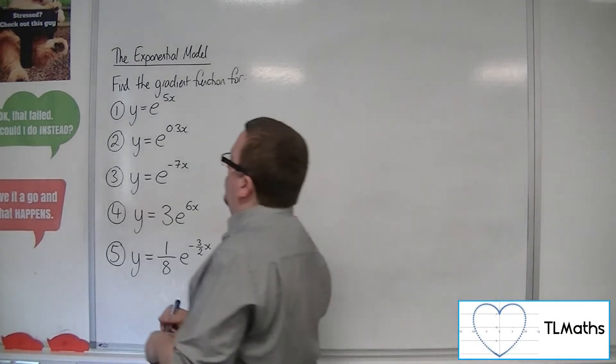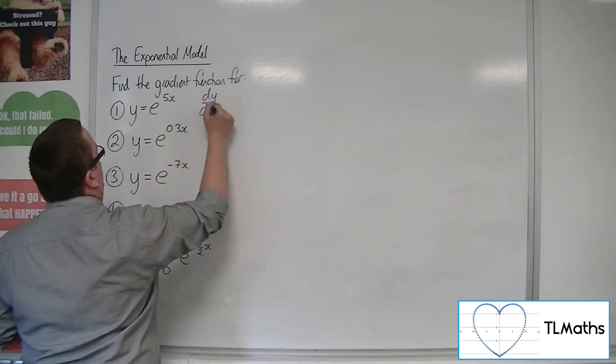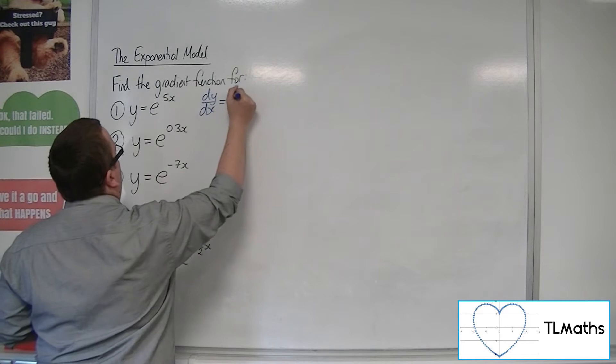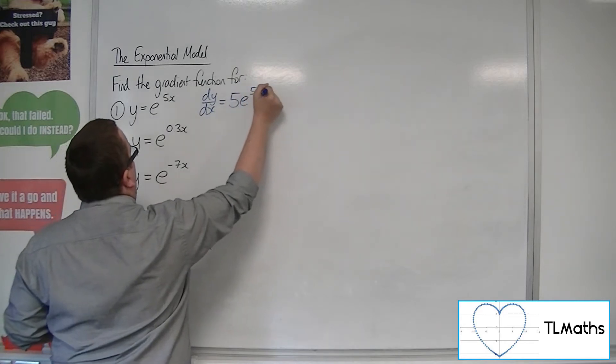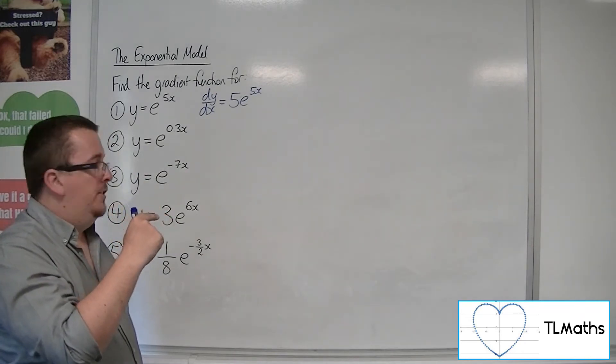So if I look at number 1, y equals e to the 5x, then dy by dx will be 5e to the 5x. So the number that's in front of the x, the coefficient of x, comes down to the front.